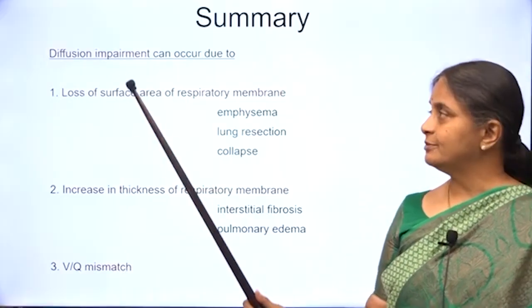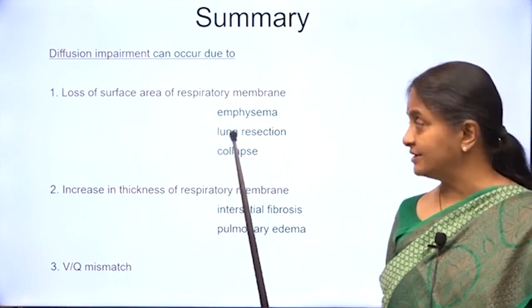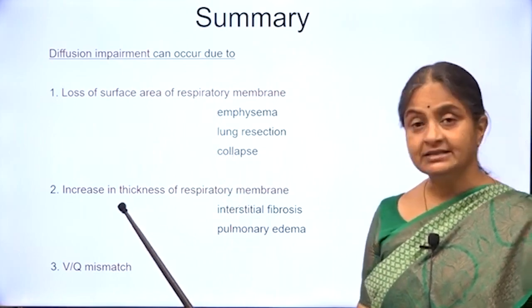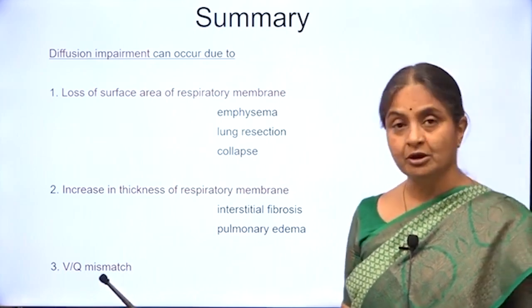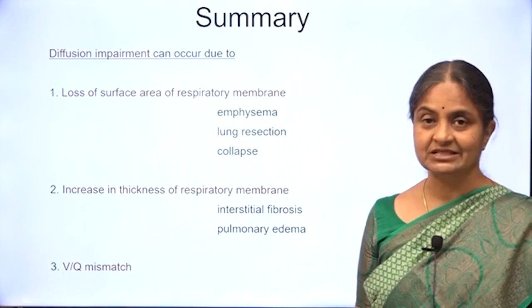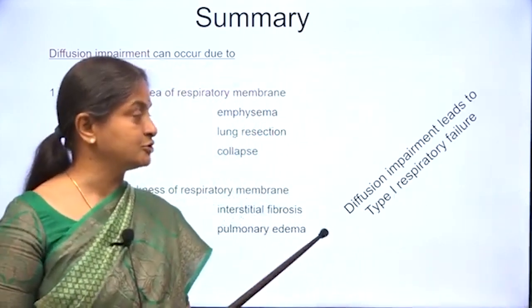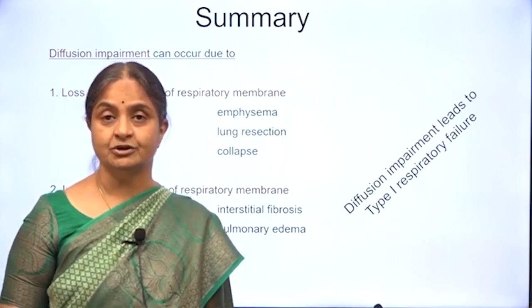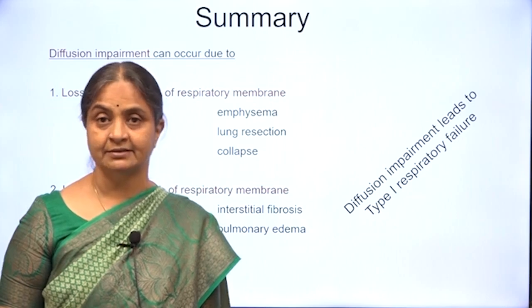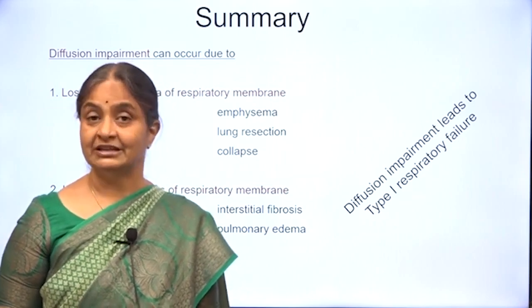In summary, diffusion impairment can occur due to loss of surface area of the respiratory membrane, increase in thickness of the respiratory membrane, or a phenomenon called ventilation perfusion mismatch which we will discuss later. We should remember that diffusion impairment causes type 1 respiratory failure where arterial oxygen concentration can be lower and hypoxia can occur, but arterial carbon dioxide concentration can be normal — there is no hypercarbia. Thank you for your attention.